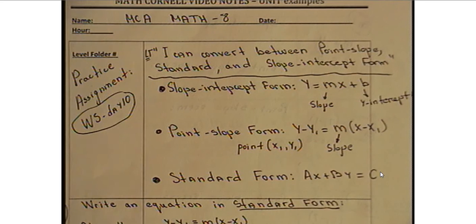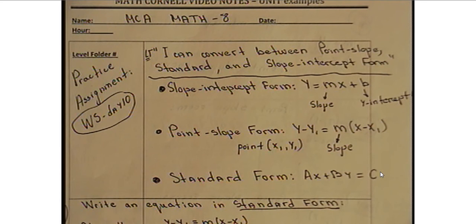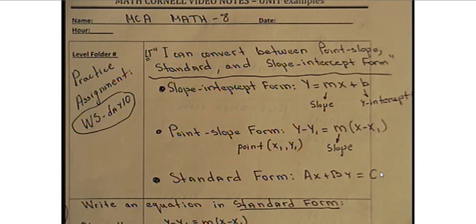Hello everybody! Here is day 10 and today's topic will be very popular because I know how hard we work through these forms, and there are still questions about it. Hopefully by doing this additional practice you'll feel more comfortable dealing with those examples. The learning target today is: I can convert between point-slope, standard, and slope-intercept form.